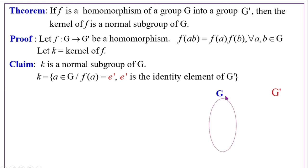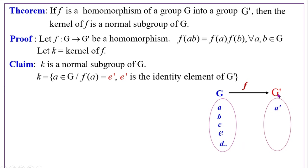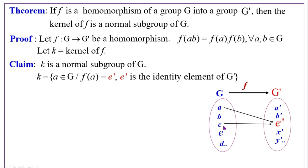We have a domain group G with elements A, B, C, E, D, and so on, and a co-domain group G' with elements A', B', C', E', X', Y', and so on. There is a function F from G to G'. We find which elements of G are mapped into the identity E' of G'. For example, A is mapped into E', C is mapped into E', and E is mapped into E'. So ker(F) contains elements A, C, E.